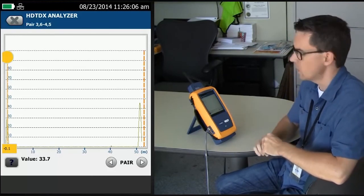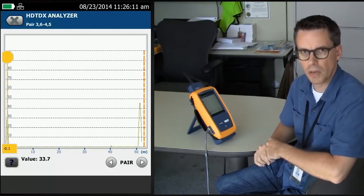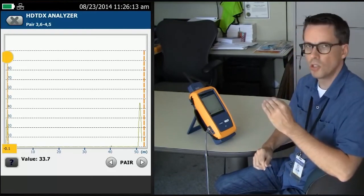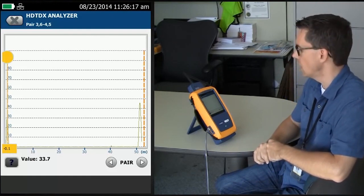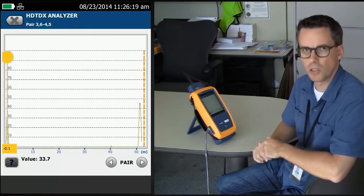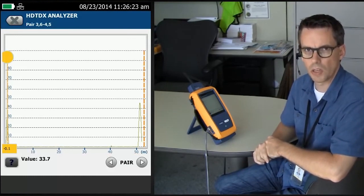The first thing I would do is re-terminate the far end. And, indeed, in this customer, when he re-terminated the far end correctly, the margin came up and he got a very good pass. That is how you diagnose a termination issue on the DSX 5000 cable analyzer that caused a crosstalk issue.